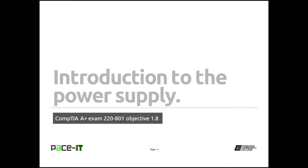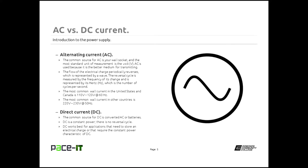Let's begin by introducing you to the power supply. We start by talking about electricity, beginning with alternating current. Alternating current is the common source of AC that comes from your wall socket, and its standard unit of measurement is the volt. AC is used because it is a better medium for transmitting, particularly over long distances. Alternating current means that the flow of electrical charge changes periodically — it reverses back and forth, which is represented by a wave.